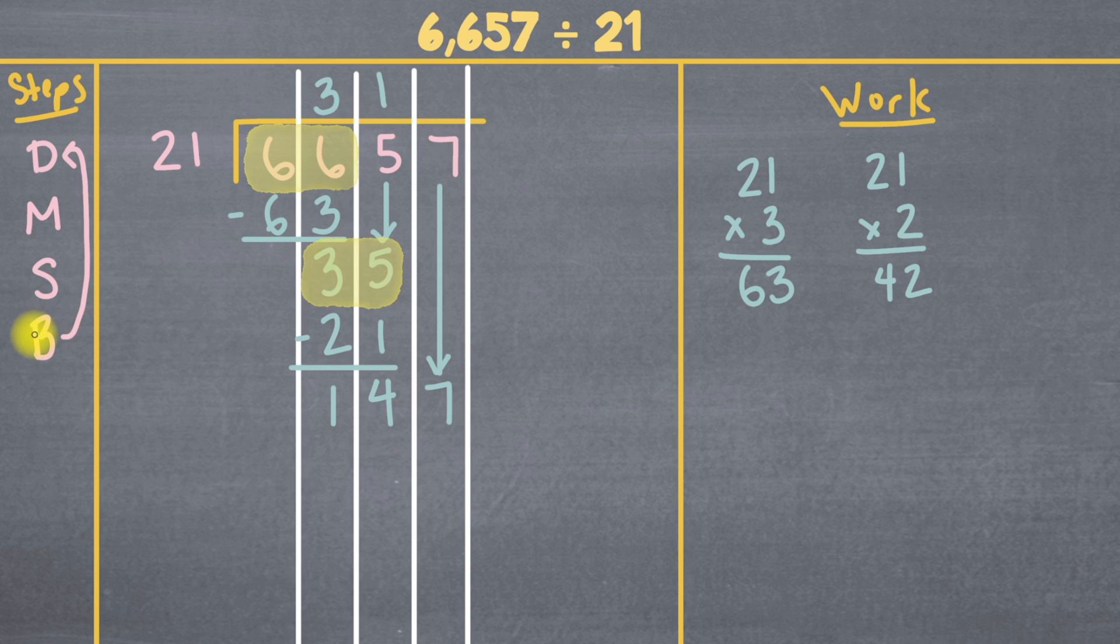Since we finished bringing down, now we go back to division. But what are we dividing now? Are we dividing 1? Are we dividing 4? Are we dividing 14? No. We're dividing everything after we brought that number down. Which means, since we brought down our 7, we're dividing all of this, 147. Now that's a big number. How many times do you think 21 can go into 147?